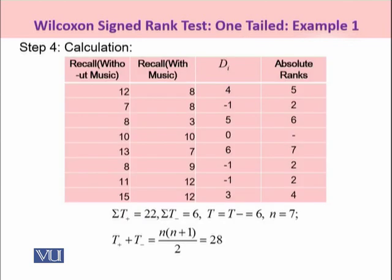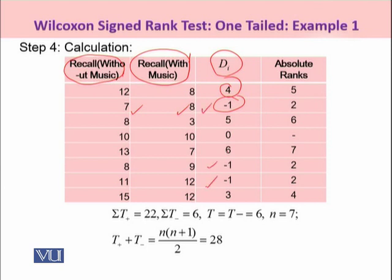So the first thing we need to do is to calculate the differences. So students, 12 minus 8 will give us 4. Similarly, 7 minus 8 will give us minus 1. Now, let's see here, note that you have one, two, three values observations as well as negative signs while the rest of the observations would have positive signs. Now, let's calculate the absolute ranks.